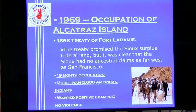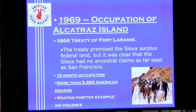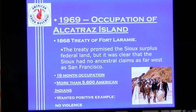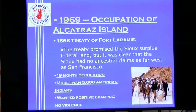The Sioux had no ancestral claims to land as far west as San Francisco, but they said: you've broken treaties, so we're going to take this one and bend it a little bit. In 1969, more than 5,600 American Indians traveled to Alcatraz Island and occupied it for 19 months — just over a year and a half. They wanted to set a positive example, meaning no violence, but that wouldn't last.